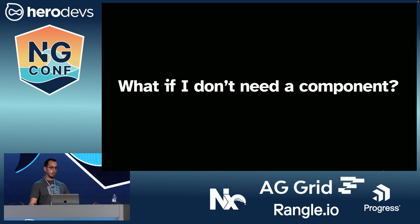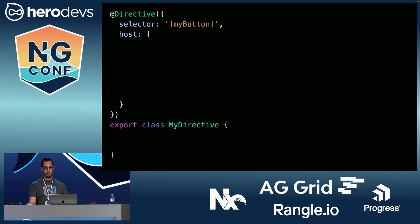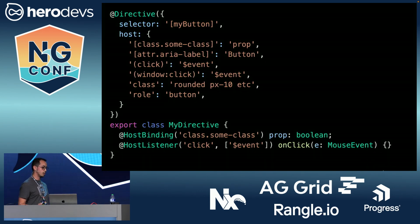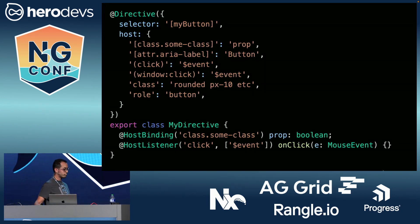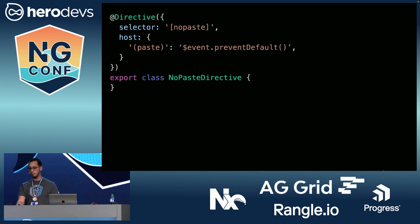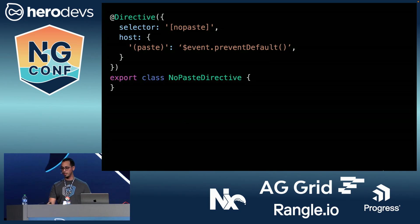What if you don't need a component? Maybe you need a directive. Since the component inherits some properties from the directive decorator, the host property is also available on directives. Dynamic class binding, static classes, attributes, events, and the decorators are all available when using directives as well. You can use this to compose patterns and abstract things like event handling.